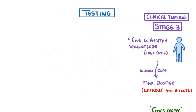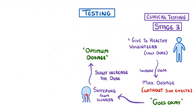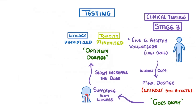If this all goes okay, then we give the drug to people suffering from the particular illness that the drug is trying to target, and again slowly increase the dose. This time, we're looking for the optimum dosage, which is the dose at which the benefits — so the efficacy — is maximised, but the toxicity is minimised.